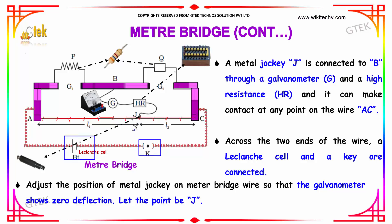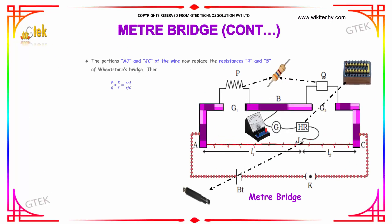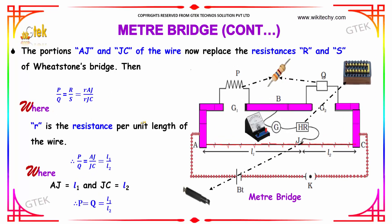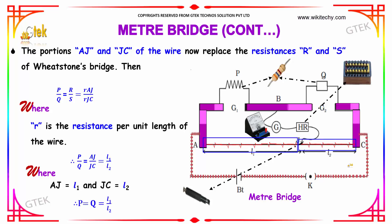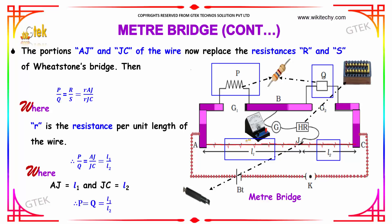Adjust the position of the metal jockey on the meter wire so that the galvanometer shows zero deflection. Let the point be J. The portions AJ and JC of the wire now replace the resistances R and S of the Wheatstone bridge. You now have P, Q, R, and S.